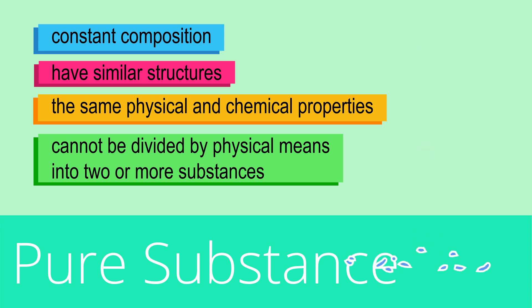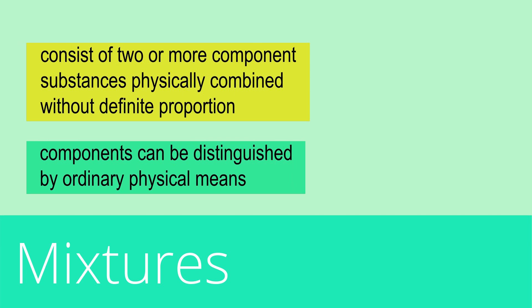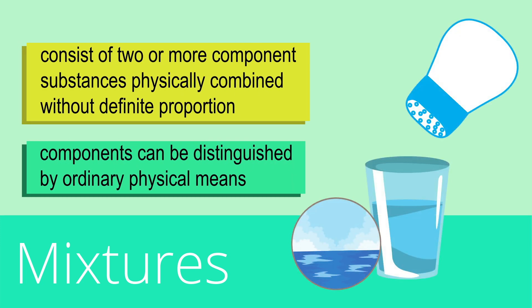Water is an example. On the other hand, mixtures consist of two or more component substances that are physically combined without definite proportion and can be distinguished by ordinary physical means. Salt water is an example.